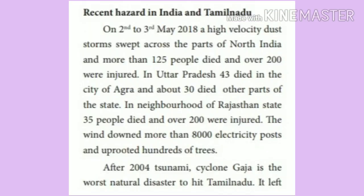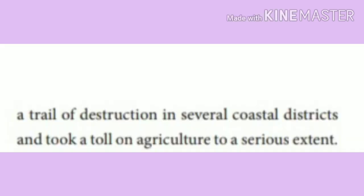After the 2004 tsunami, Cyclone Gaja is the worst natural disaster to hit Tamil Nadu. It left a trail of destruction in several coastal districts and took a toll on agriculture to a serious extent.